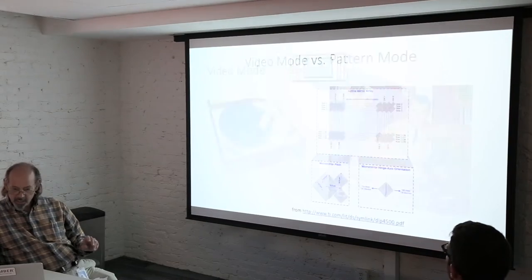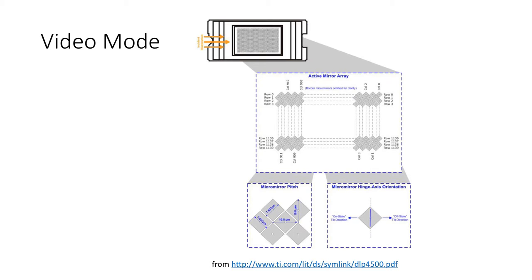So there's a similar duality in the way that Ember can be used, and that's because the projector that's in it was designed to go into two very different markets. The consumer market for applications like home theater, and also industrial market for applications like structured lighting and 3D printing. For the home market, they provided what they called video mode, and they also wanted to make the projector as small as possible.